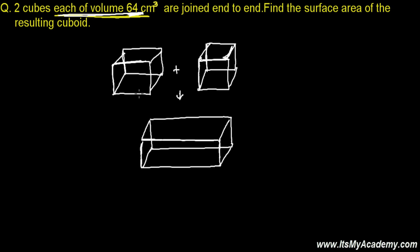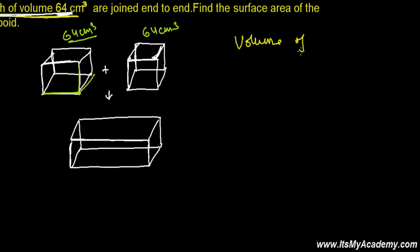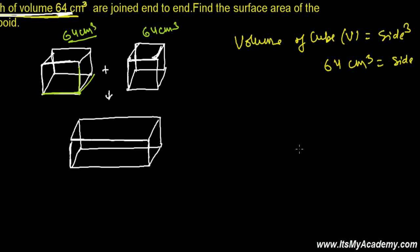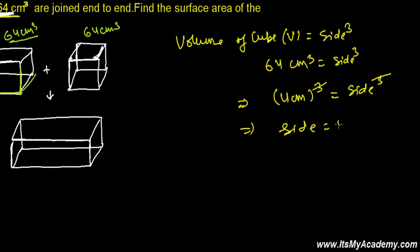Each cube has a volume of 64 centimeter cube. From the volume, we can find the length, breadth, or height — because all of them are the same for a cube. The volume of a cube equals side cubed. So 64 = a³, which gives us 64 = 4³. The cube cancels and we get side equals 4 centimeter.